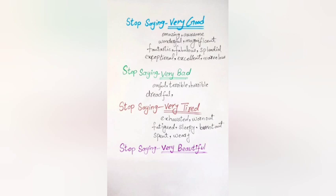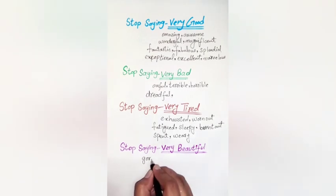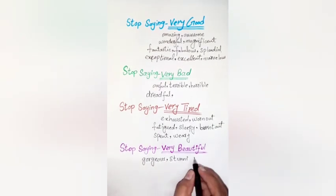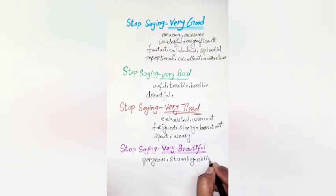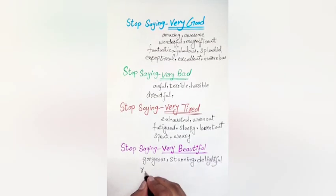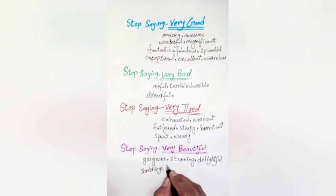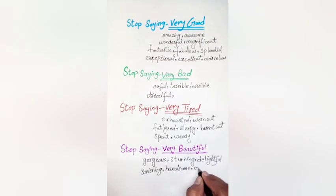Let's make some examples. I was up all night — I'm exhausted. I'm feeling sleepy, I'd better go. I'm sick of your disrespectful behavior. Stop saying 'very beautiful.' Sometimes we just need the word beautiful to express how much we appreciate someone or something, but if we want to take it a step further, instead of saying 'very beautiful' we could say: gorgeous, stunning, delightful, ravishing, handsome, magnificent, bewitching, or charming.